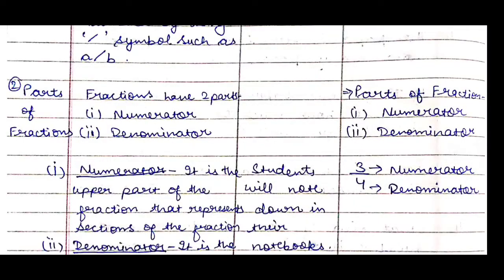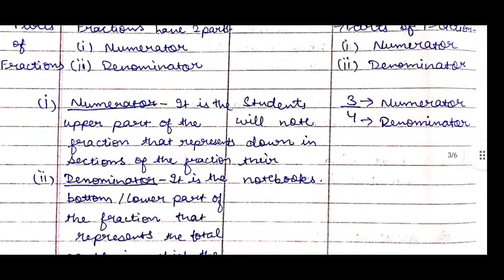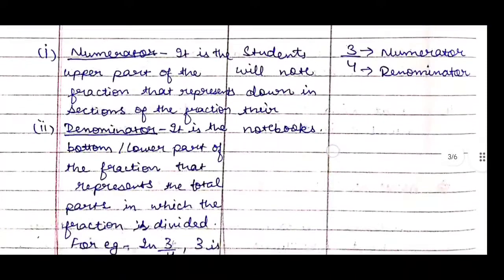The next teaching point is parts of fractions. Fractions have two parts: first is numerator, second is denominator. The numerator is the upper part of the fraction that represents the sections of the fraction. The denominator is the bottom or lower part of the fraction that represents the total parts into which the fraction is divided.